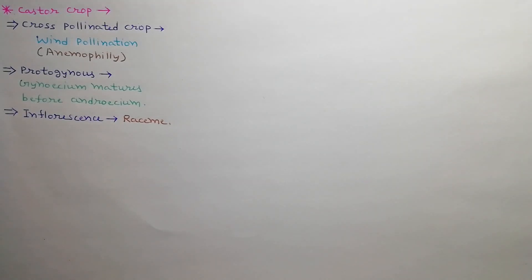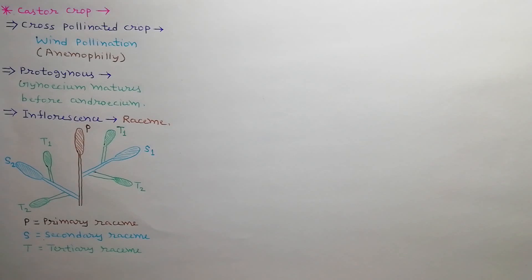Racine inflorescence is found in castor crop. As shown in the diagram, the top of the main stem is called primary racine, top of branch on main stem is called secondary racine, and top of branch on branch is called tertiary racine.